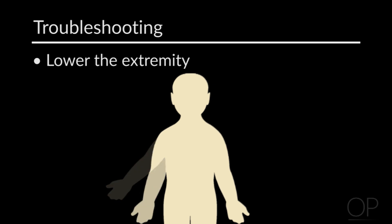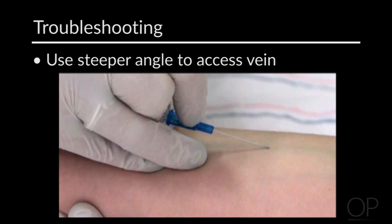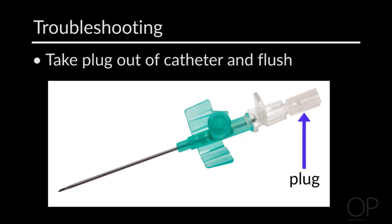For patients who are edematous, hypotensive, in shock, or have signs of poor perfusion: lower the extremity; if available, use a transilluminator or flashlight — dim the room and place the light behind the patient's skin. You can also try a steeper angle when accessing the vein and probe a bit deeper to get through the edematous tissue. Finally, you can take the plug out of the end of the catheter and flush it before you start, which will help blood show a flashback more quickly.